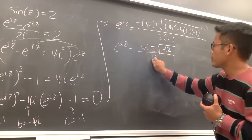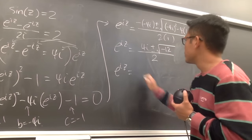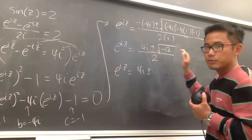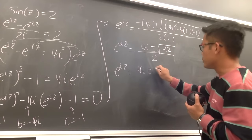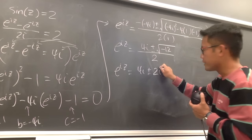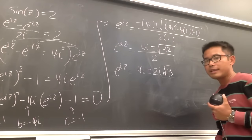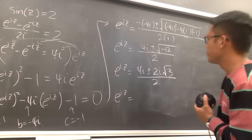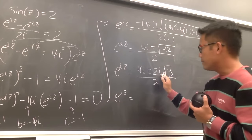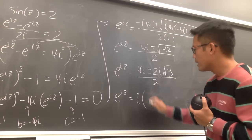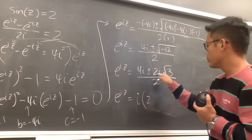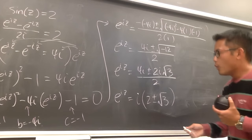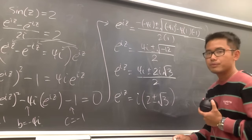So e to the iz equals (4i plus or minus square root of negative 12) over 2. We can write negative 12 as 4 times 3 times negative 1, so the square root becomes 2i root 3. Simplifying by dividing through by 2 and factoring out i: e to the iz equals i times (2 plus or minus square root of 3).